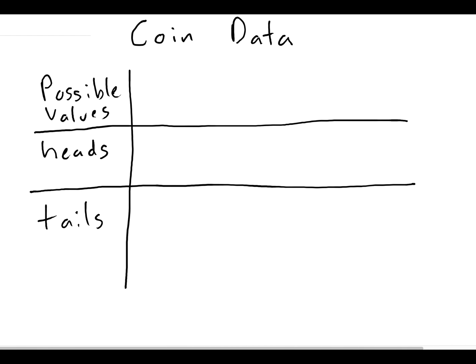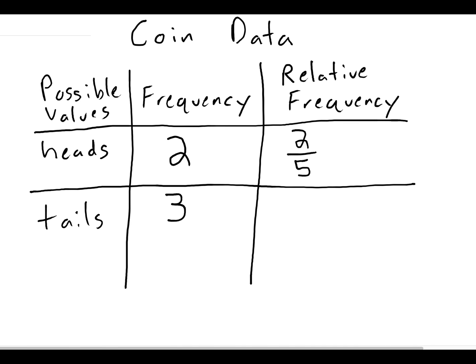And then for our second column, we're going to put the frequency. For the third column, we'll put the relative frequency. We had two heads and three tails. Those were the frequencies, the counts. And our relative frequencies were two out of five and three out of five. I'm going to write these fractions as a decimal this time. So two out of five is point four and three out of five is point six.